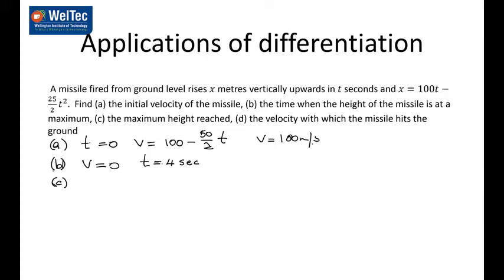The third part says find the maximum height. We know t is 4, so we put t equals 4 into the original function. That gives 100 times 4 minus (25/2) times 16, which gives the distance equal to 200.